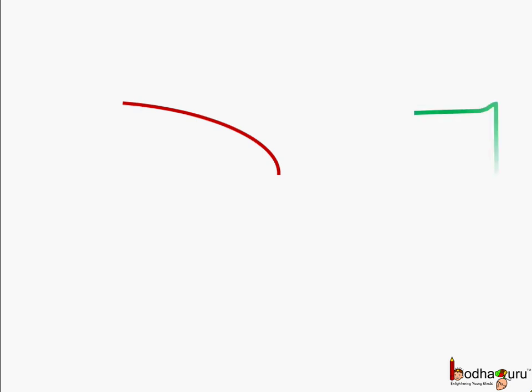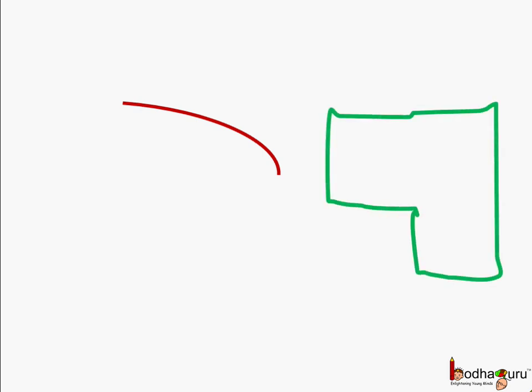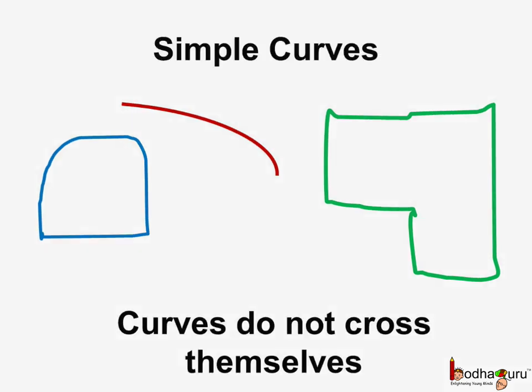Now, these are examples of certain curves. And what is the similarity between these? These curves do not cross themselves and they are called simple curves.